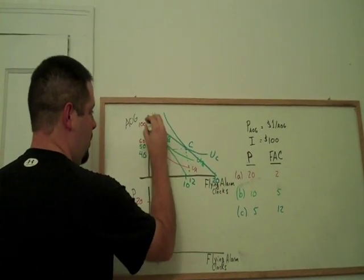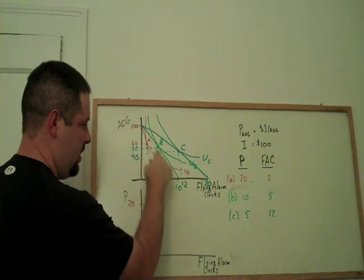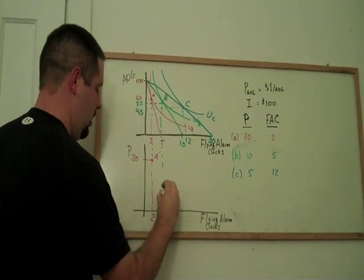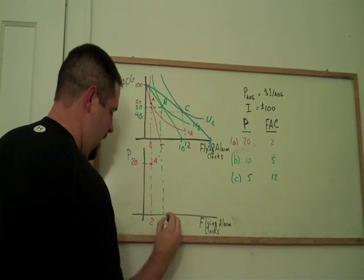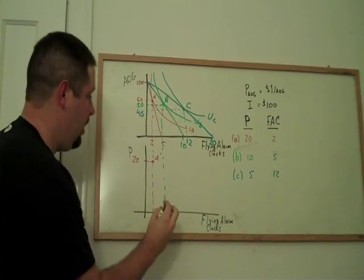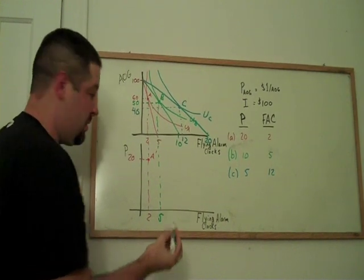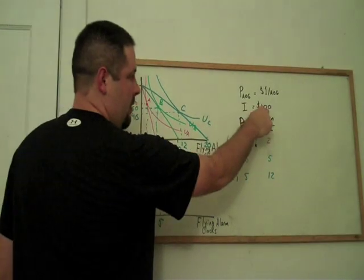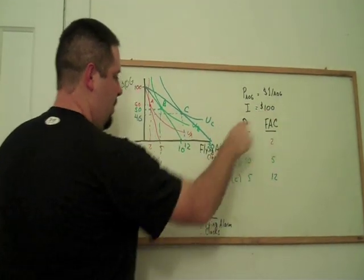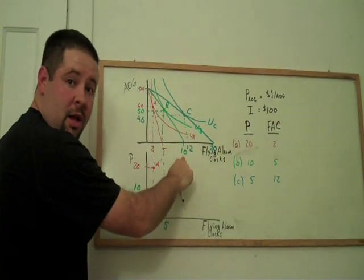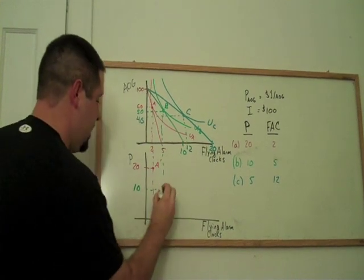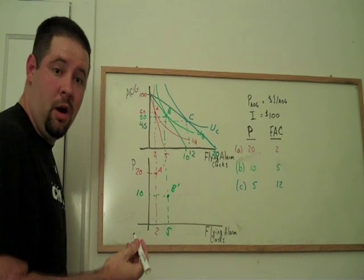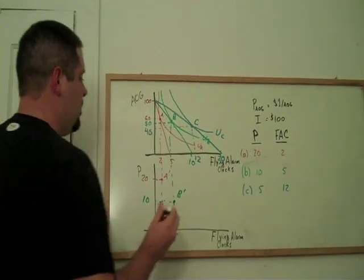See that at a price of 10, which is what defined this budget constraint, we can go ahead and get our quantity of 5. So we trace the quantity down here. We think about what was the price for that budget constraint. It was 10 because our income of $100 could buy us 10 flying alarm clocks. So that must mean that the price was 10. And so there's a point B prime on our demand curve.